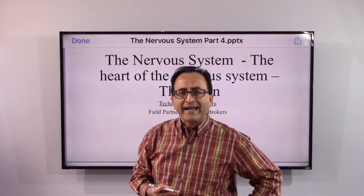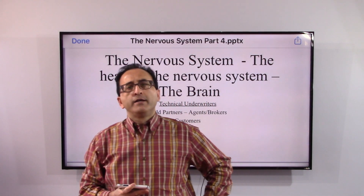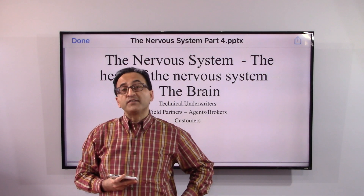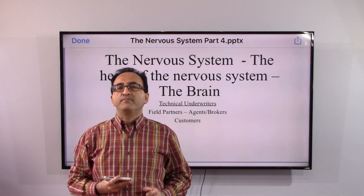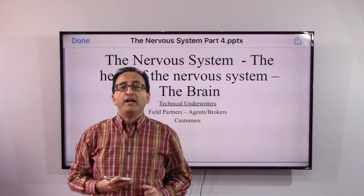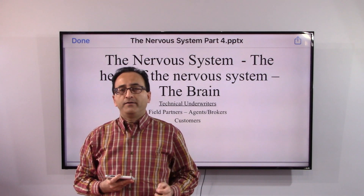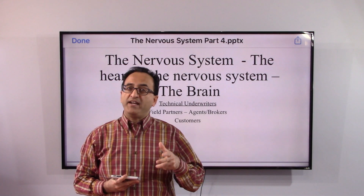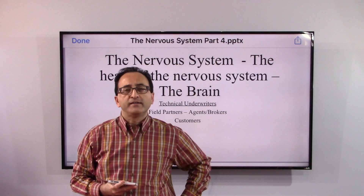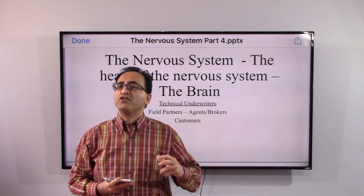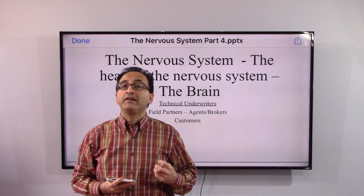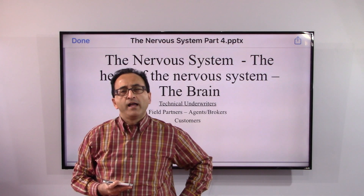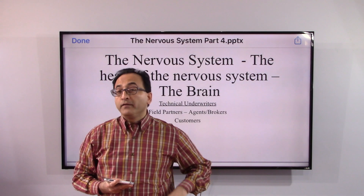Hi there and welcome back. We are reviewing the nervous system. What is the heart of the nervous system? The heart of the nervous system is the brain. So when we have to understand how our brain works, we will have to really put our heart into it.